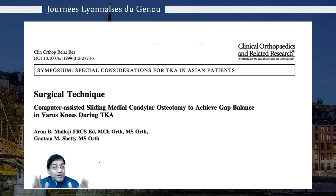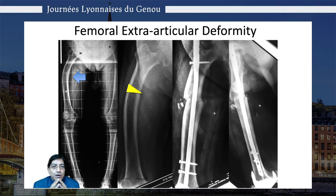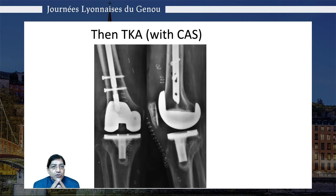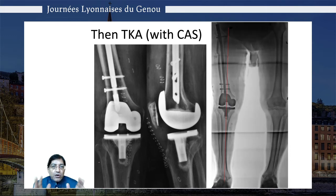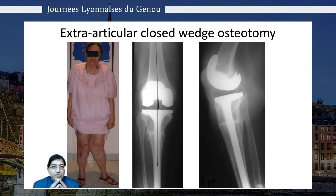If there's an extra-articular deformity, one may need to do a wedge resection followed by nailing and a navigated total knee. On the tibial side, this extra-articular deformity required a wedge resection followed by a long stem.